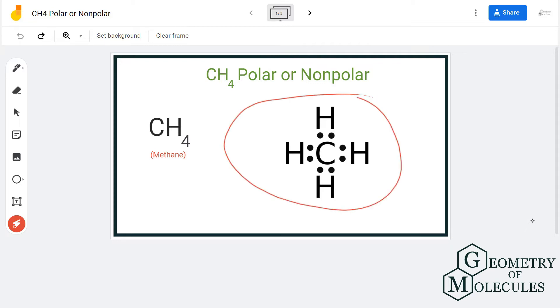Here is a Lewis structure for methane in which carbon is in the central position and it is sharing all its four electrons with four hydrogen atoms. As you can see here, it is quite a symmetrical molecule.